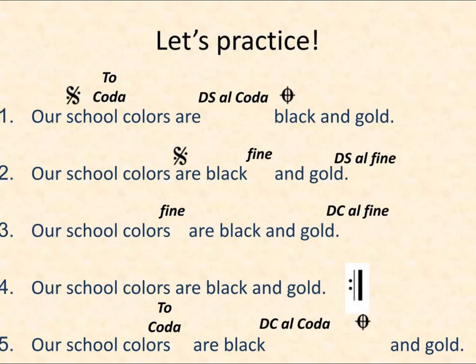Now let's apply it. Line one in English would say 'our school colors are black and gold.' But after the word 'are,' we see the DS Al Coda — go back to the sign and skip to the coda. After 'are,' we go back to 'school' because that's where the Segno is. The second time through, after 'school,' we skip to the ending: 'black and gold.' So line one reads: our school colors are — school — black and gold.